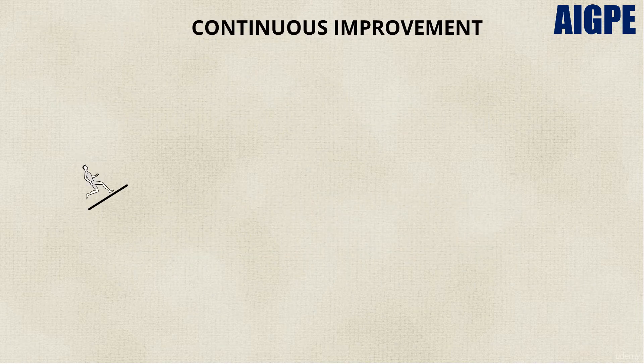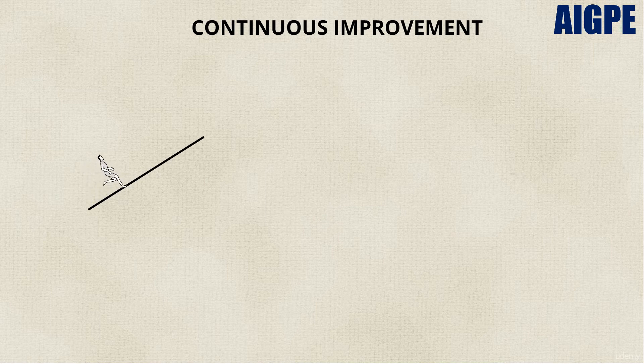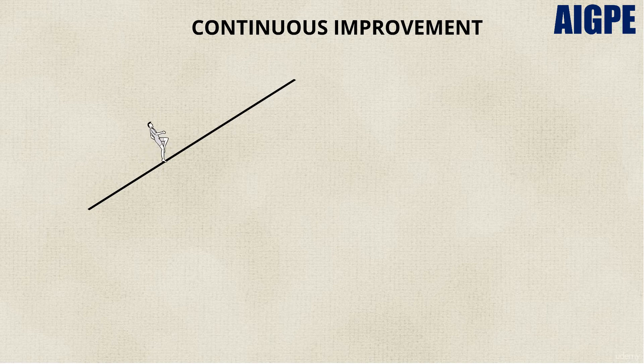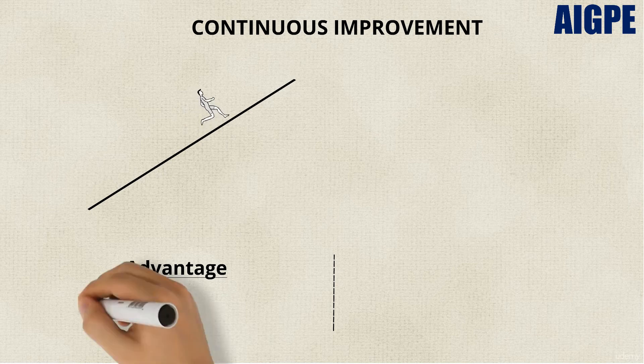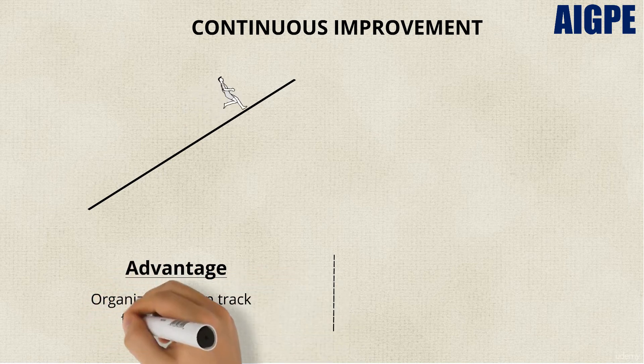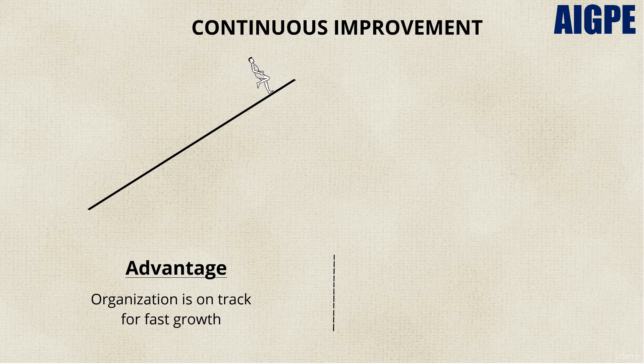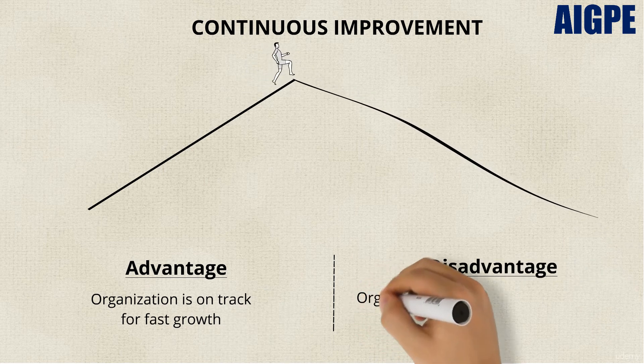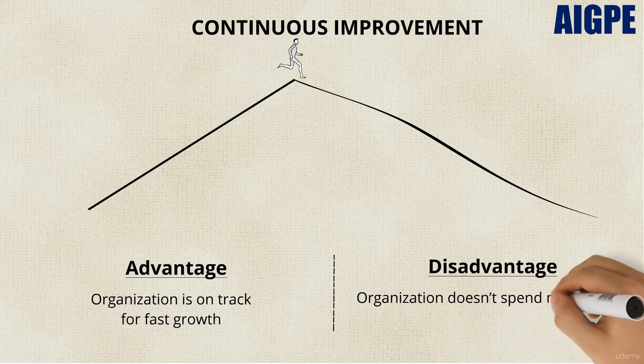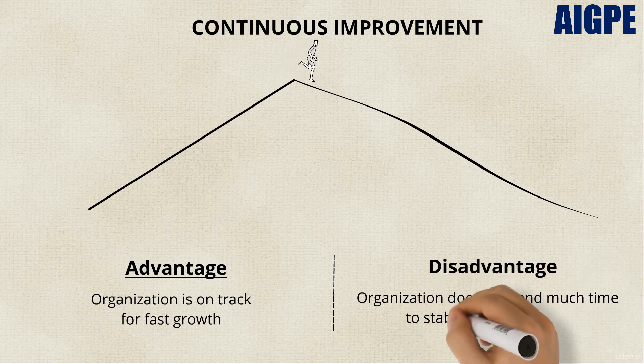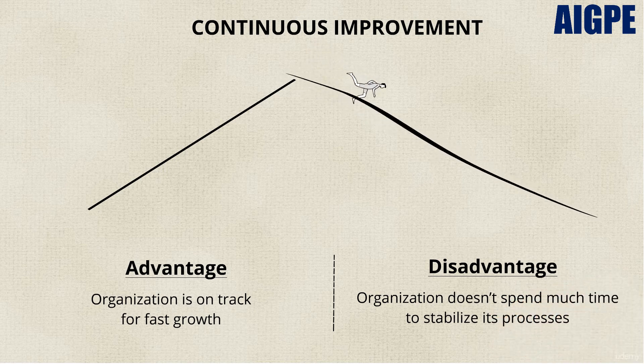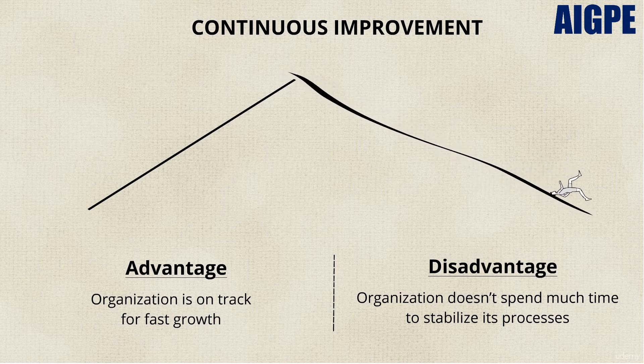Continuous improvement is where the organization continues to improve consistently. The good thing is that the organization is on track for very fast growth. However, the disadvantage is that the organization doesn't spend much time to stabilize its processes. This can lead to the downfall of the organization in the long run.